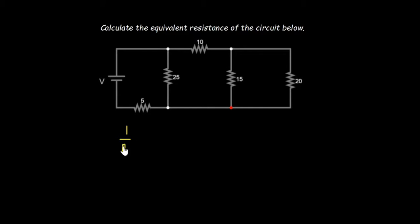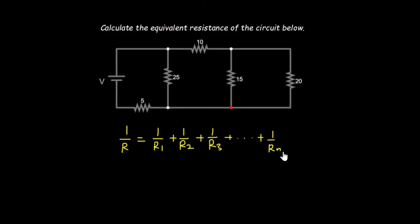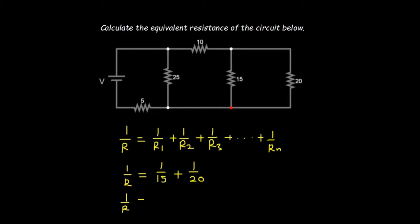For calculating equivalent resistance of resistors in parallel, we use the general formula: 1/R = 1/R1 + 1/R2 + ... + 1/Rn. In this case we have just two resistors — the 15 ohms and the 20 ohms — so this becomes: 1/R = 1/15 + 1/20. Let's simplify what we have here.